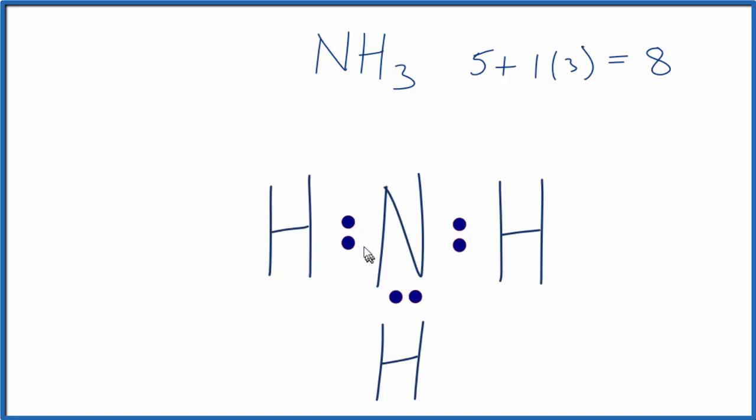Hydrogens, they always go on the outside and they only need two valence electrons, so the hydrogens have their outer shell full. The nitrogen needs two more for an octet. Since we've used six, we just put two more up here, that's eight. So this is a good Lewis structure for NH3. We have a lone pair of electrons and then three bonds with the hydrogen.